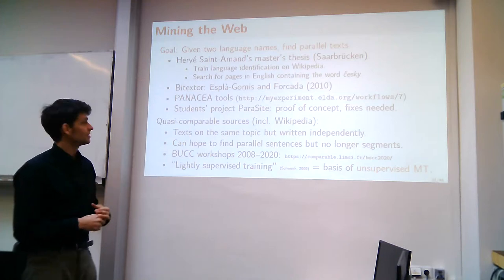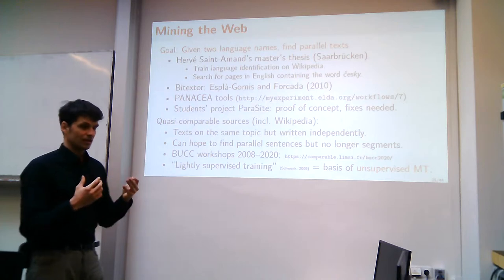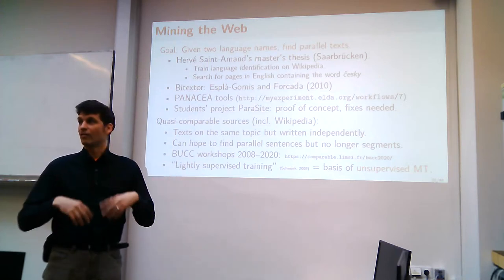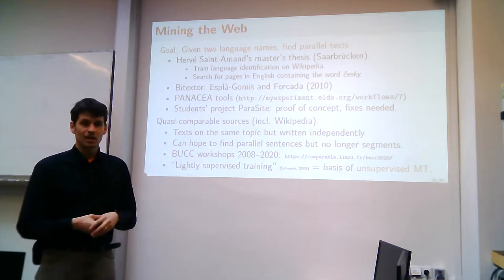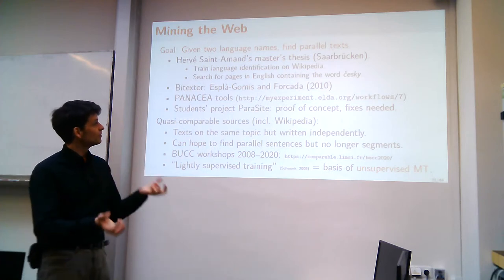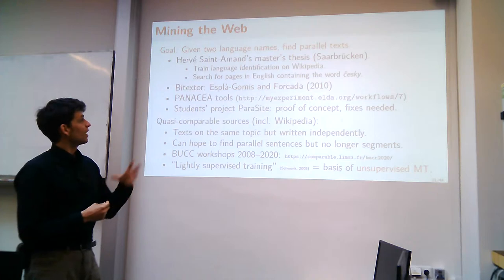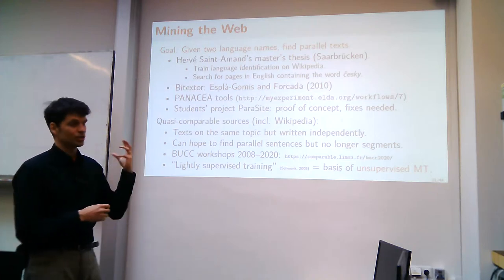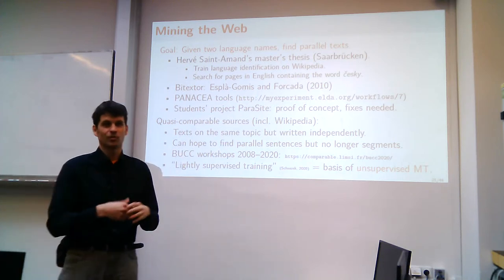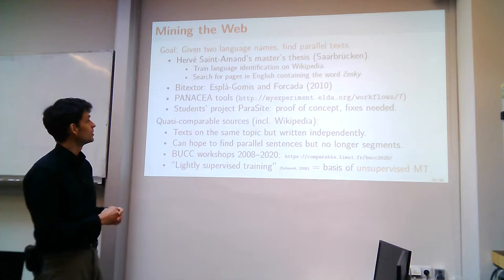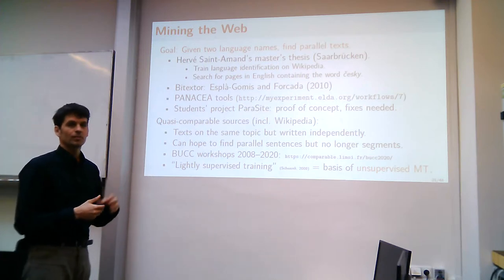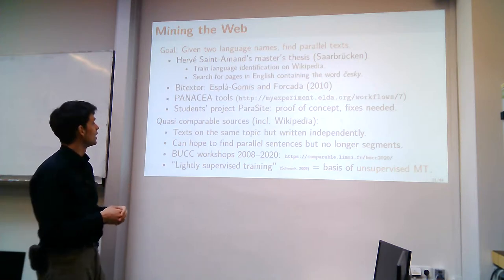A very simple idea tested in one thesis at Zarbkin was to start with just the two language names. You tell the program 'I need a Czech and English parallel corpus,' and the program does everything automatically. It looks up in Wikipedia what these languages are, downloads sample pages in those languages, trains language identification for the two languages, learns the names of the languages, and then searches for web pages in English containing the word 'česky' and vice versa. Search engines allow you to search for pages in a particular language — that's the trick. You then process and clean up the links obtained.